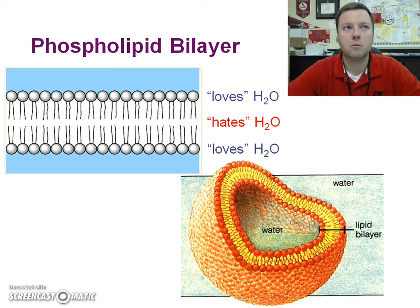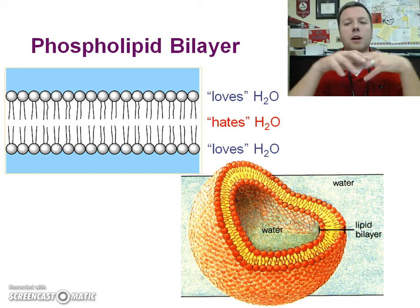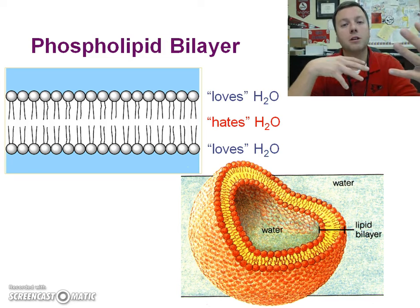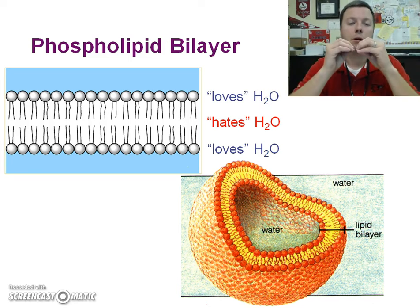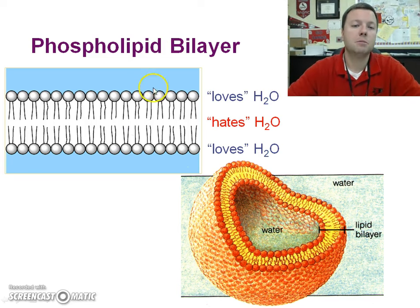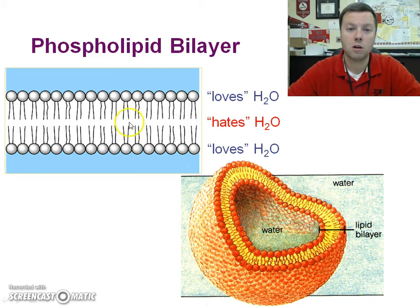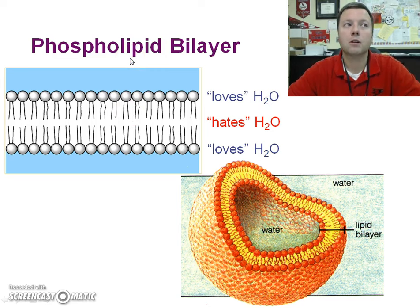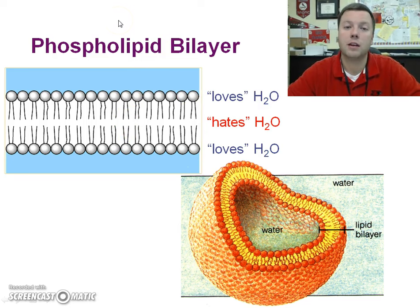This arrangement is sort of spontaneous — it just occurs. All the parts that love water are always near it and can interact with the polar water, whereas the hydrophobic areas are always away from water. This keeps things in or out because small non-polar, non-charged particles can pass easily. But if something is hydrophilic or polar in nature, it gets about halfway through and gets kicked out — that's where selective permeability comes into play.